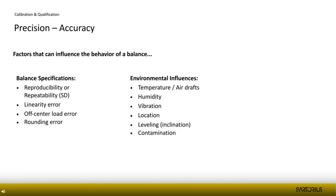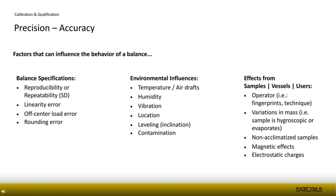We also have environmental influences on the measurement and balance behavior, such as temperature, humidity, location, and leveling — everything affecting instrument performance. And there are factors from samples, vessels, and users, like fingerprints, hygroscopic samples, or magnetic effects. These are the factors that affect sample behavior while weighing.